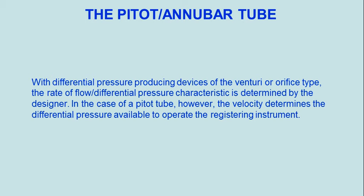With differential pressure producing devices of the venturi or orifice type, the rate of flow versus differential pressure characteristic is determined by the designer. In the case of a pitot tube, however, the velocity determines the differential pressure available to operate the registering instrument.